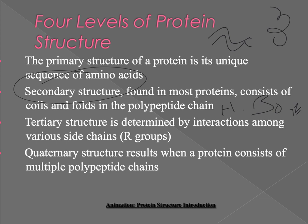Your tertiary structure is determined by the side chains — how do the side chains interact? Are two sulfurs going to form a disulfide bond? Are acids and bases going to interact? Are positively charged amino acids going to repel each other, while a positive and a negative attract each other? All of that is determined in your tertiary structure. Finally, your quaternary structure is when the actual structure of the protein comes together with multiple polypeptides. We get four polypeptides — how they come together makes this structure.